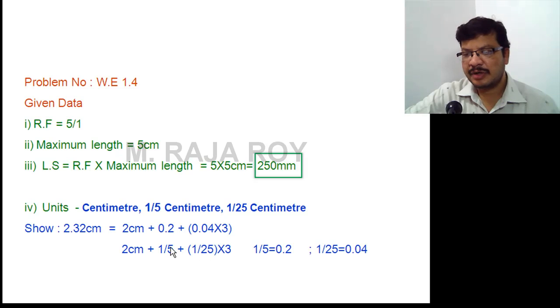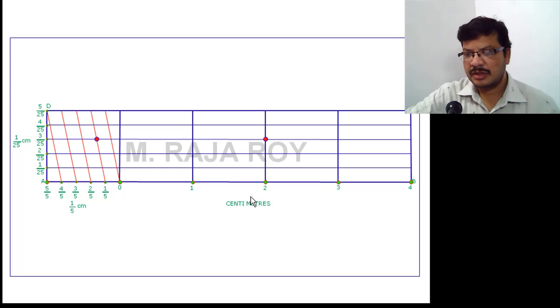So here, 0.2 means 1/5. The total will be 2.32, so this is 2 centimeters, this is 0.2, and 3/25, this is 0.04 into 3, then you will get 2.32 centimeters.